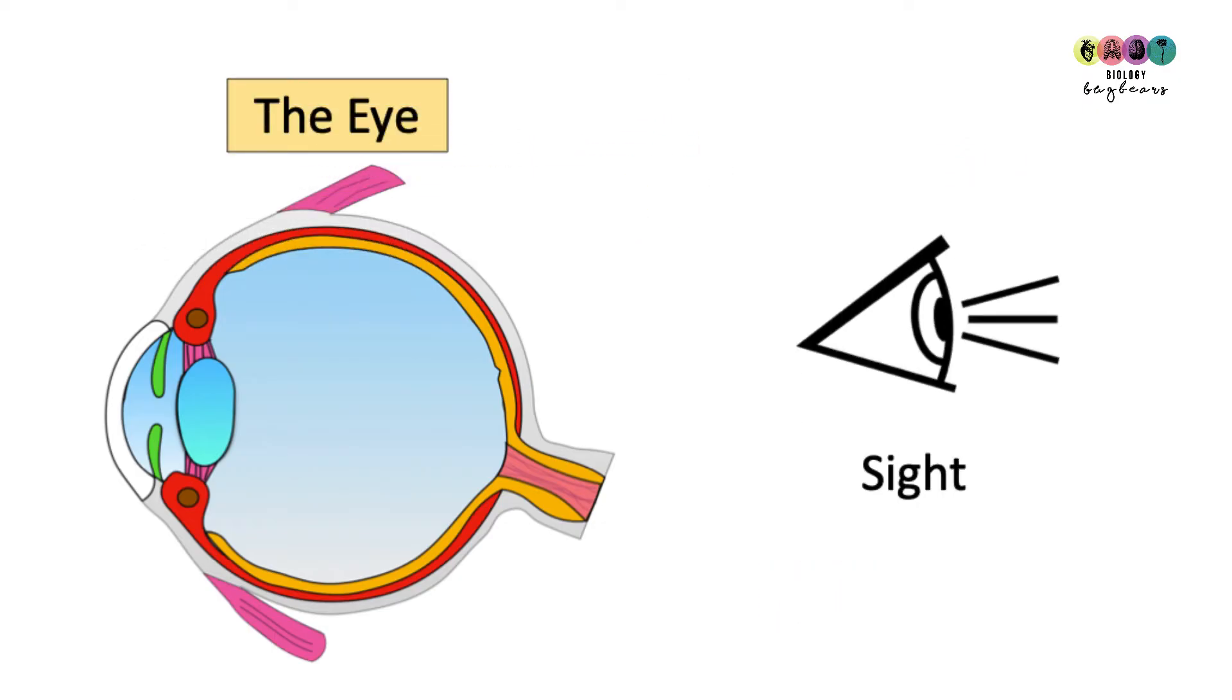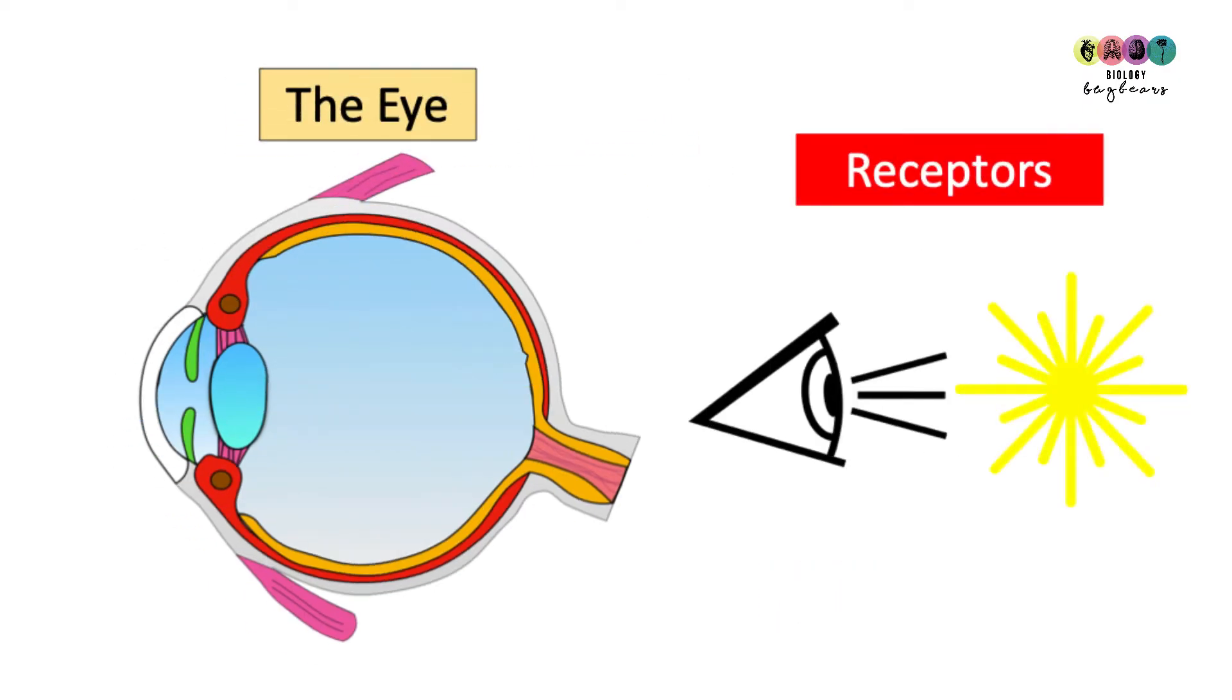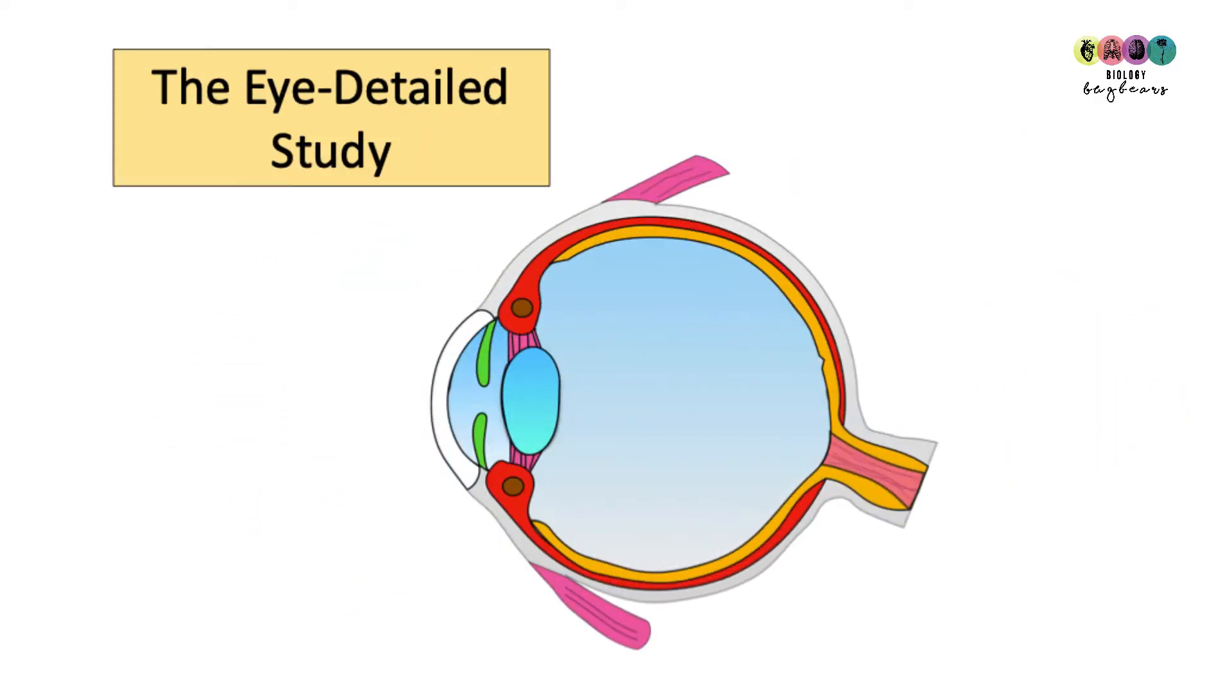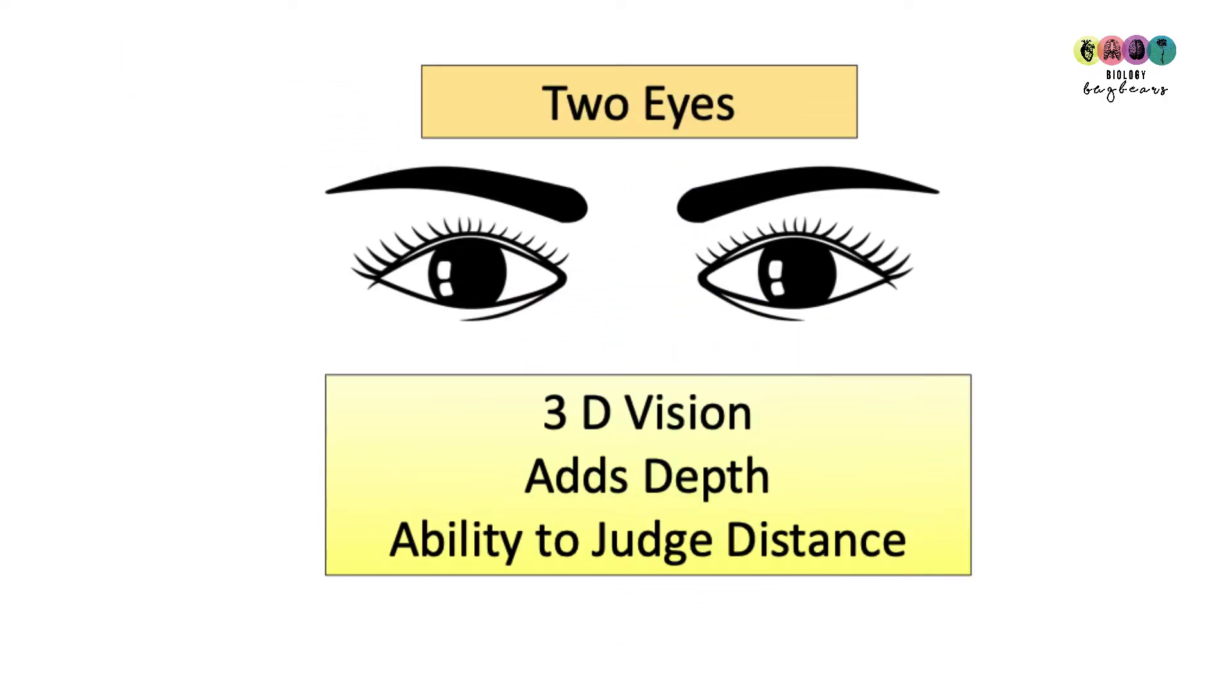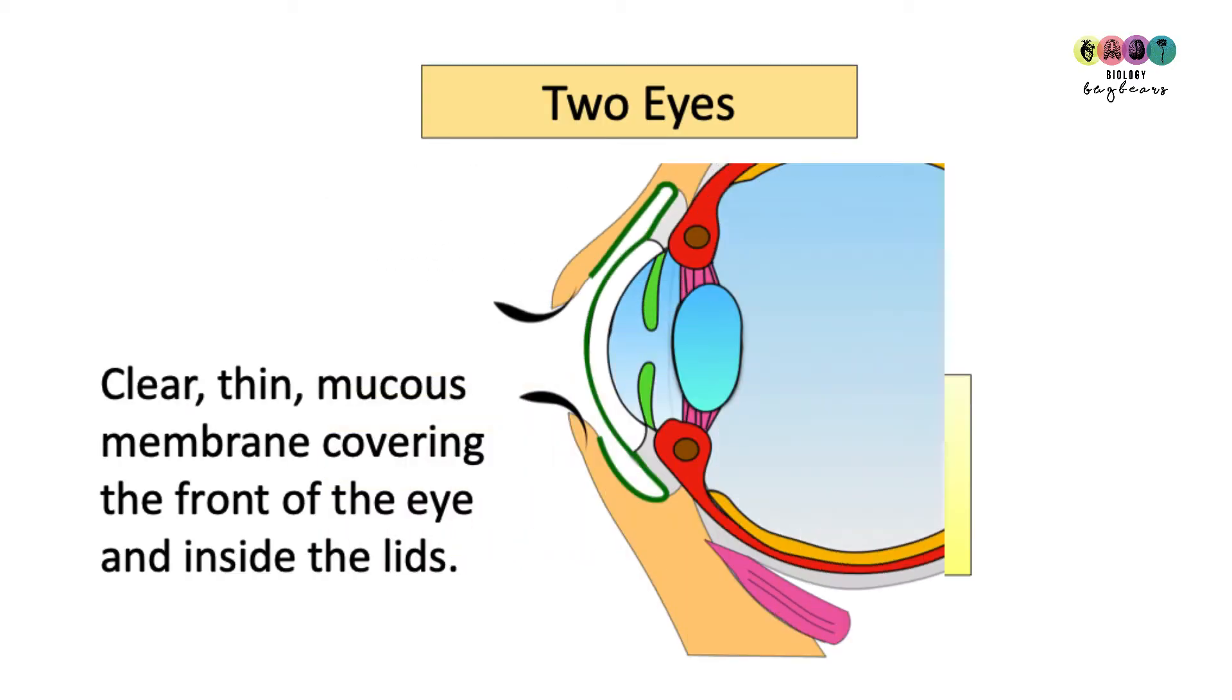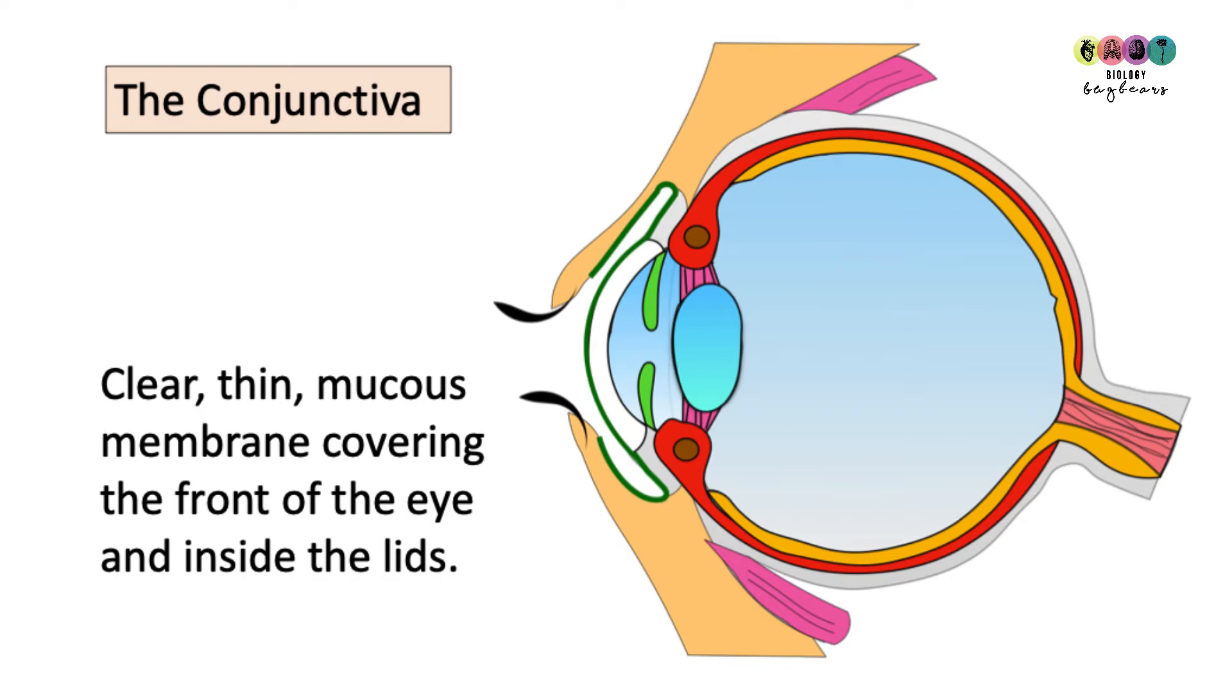The next sense organ is the eye and it's the organ of sight or vision. The eye has specialised receptor cells that detect light. So for this sense organ we need to study it in detail and that means knowing the structure really well. It's often been asked in exams why is it a benefit to have two eyes? Well two eyes gives us three-dimensional vision. It adds depth and gives us an ability to judge distance better. So let's take a detailed look at the structure of the eye.